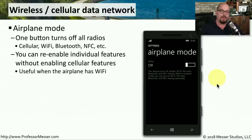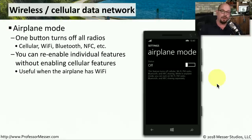Many smartphones have an airplane mode that allows you to disable or enable all of these networks simultaneously. This way, if you're getting on an airplane and need to disable all of these networks during takeoff and landing, you can click one button and everything will turn off. After takeoff, if you want to take advantage of the 802.11 wireless network on the plane, you can simply enable just the 802.11 and leave all of the other radios disabled.